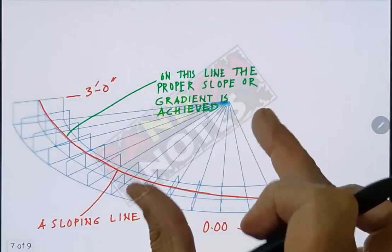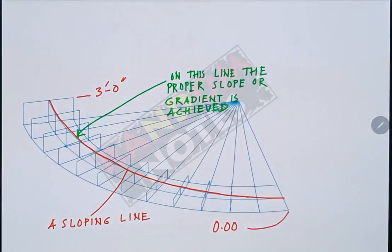This red line represents one level of the ramp. It is on this red line that we have the desired gradient of 1 in 12.